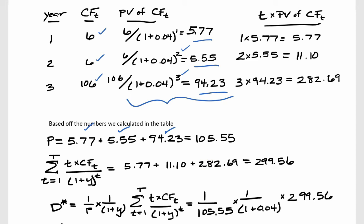We know this bond is trading at a premium because market yields are four percent but this is a six percent coupon rate bond. The next part of the modified duration formula we need is the sum of t times the discounted cash flows, which we've already calculated in that column. Summing 5.77, 11.10, and 282.69 gives us 299.56.